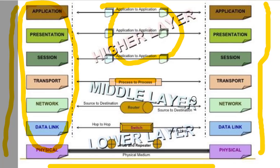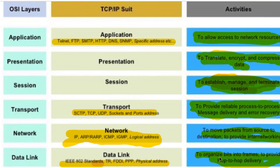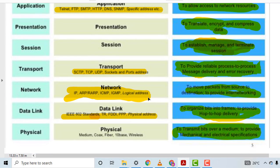Network layer uses source and destination addresses; Data Link layer uses hop-to-hop delivery with switches, hubs, and repeaters. Transport layer works process to process. We'll discuss routers and switches in detail in the next session. Note down which protocols are used on which layer — this is a very important concept that will be asked in examinations.